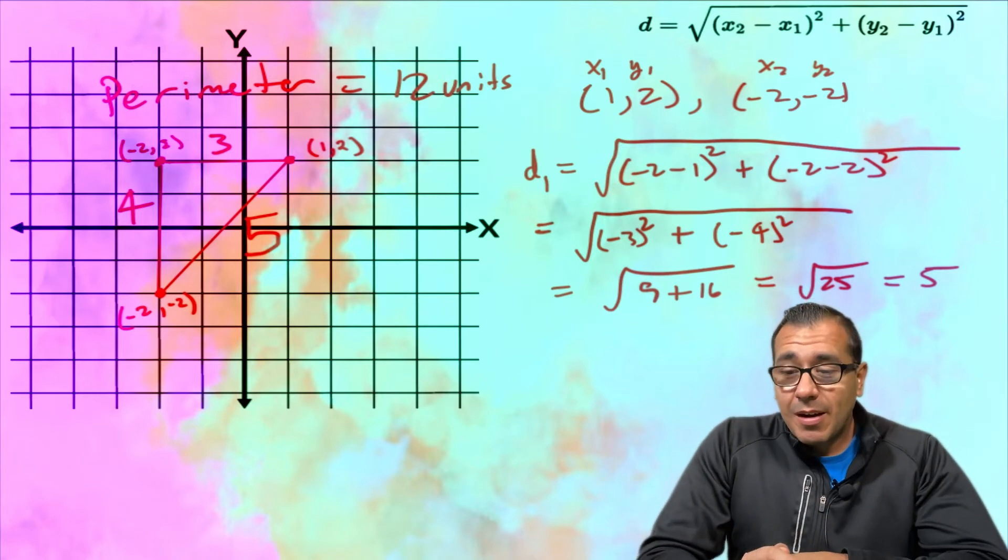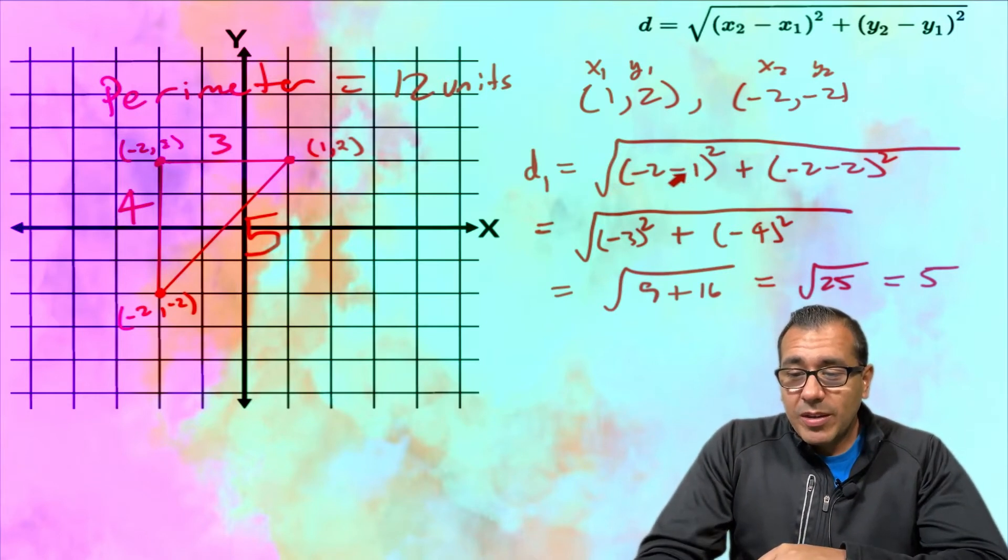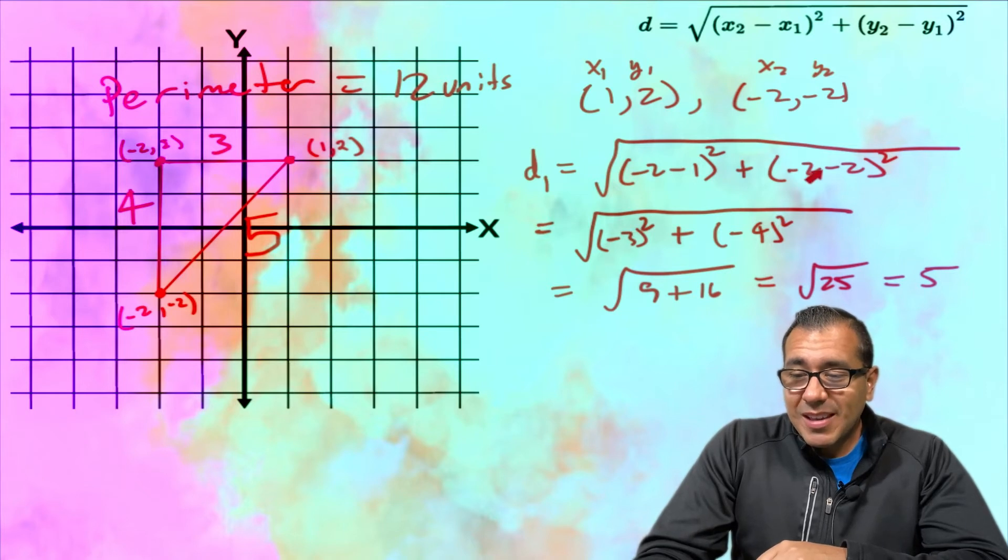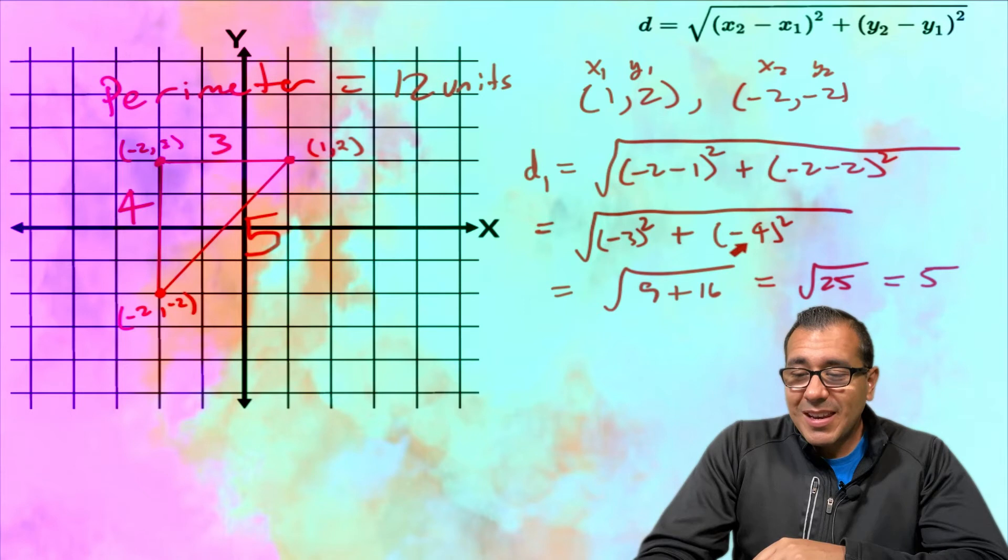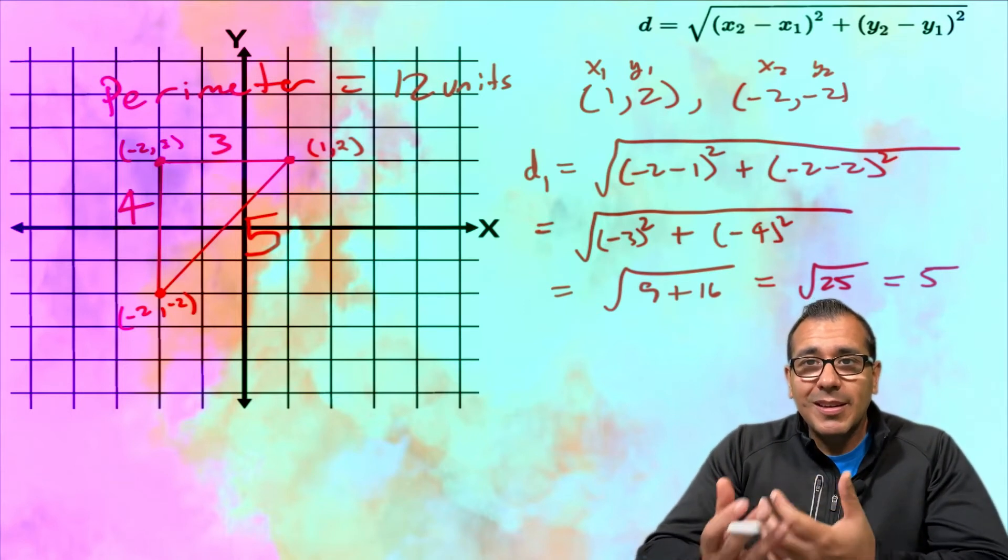All right, so we simplify. So we get -3 squared plus, and this becomes -4 squared. -3 squared is 9, -4 squared is 16, so again all we're doing is some arithmetic here.